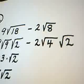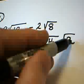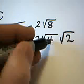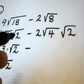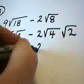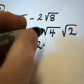And the reason I broke it up that way, square root of 4 times the square root of 2 is the square root of 8, but notice that 4 is a perfect square. So, I have a minus sign. I have this 2. This is a times. The square root of 4 is also 2.